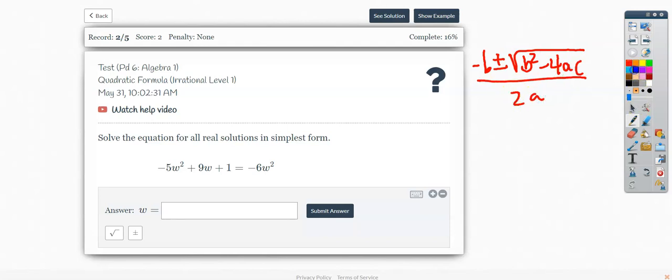Your sentence does need to be in standard form before you can start. So you have to have a 0 on one side. Move that minus 6W squared over. You get 1W squared plus 9W plus 1 equals 0. So now I know my A, B, and C values.